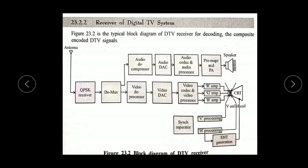Now we discuss the digital receiver system. The antenna receives the signal from the free environment and from the TV transmitter. The QPSK receiver is a demodulator that demodulates the received signal. Then the demultiplexer separates the audio and video signals. The audio signal is sent to the audio digital-to-analog conversion, where we convert the digital signal into an analog signal. We then send it to the audio codec and audio processor, which is basically a filtering process that improves the audio quality.